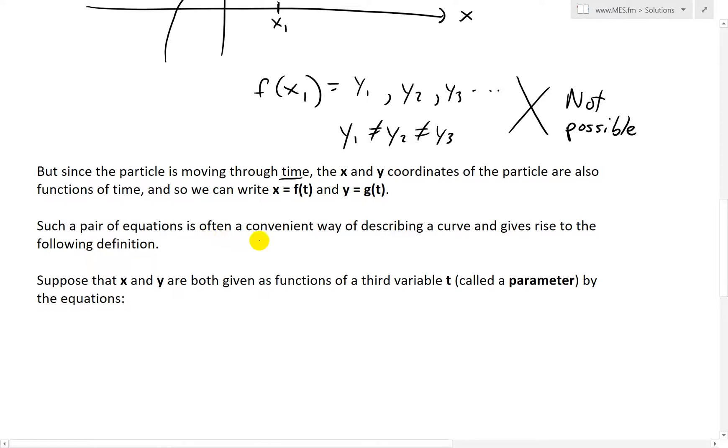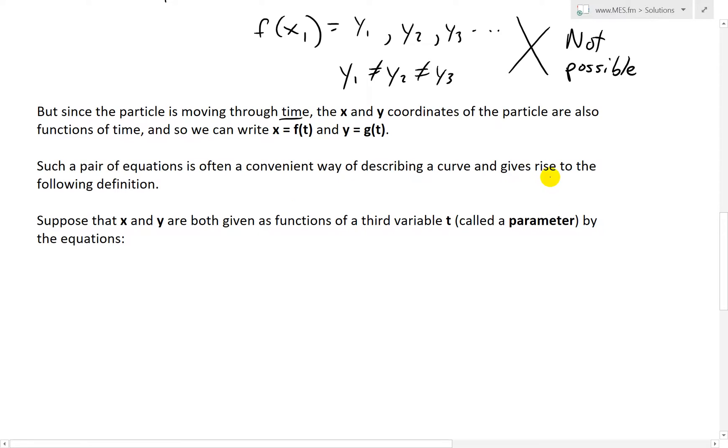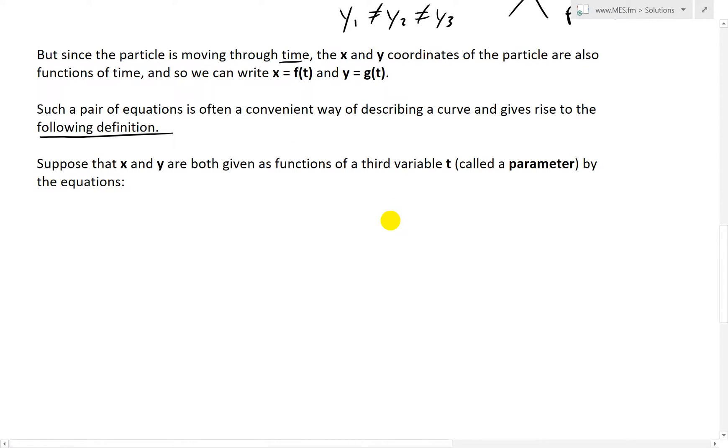Such a pair of equations is often a convenient way of describing a curve and gives rise to the following definition. So the definition is, suppose that x and y are given as functions of a third variable, t, called a parameter by the equations x equals f(t) and y equals g(t).